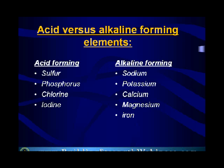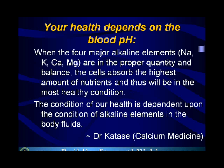Here is another table showing which foods are acid-forming and which are alkaline-forming. When these four elements — sodium, potassium, calcium, and magnesium — are in the proper quantity and balance, the cells absorb the highest amount of nutrients and will be in the most healthy condition. You can see the connection between your pH balance and your ability to absorb and use nutrients. If your cells are more acidic, they will not be able to use nutrients as they should.